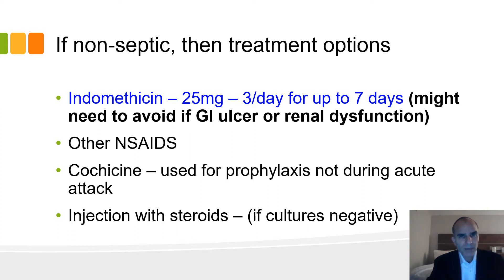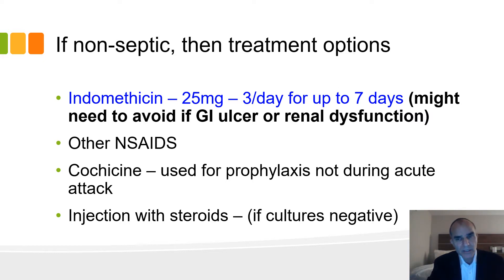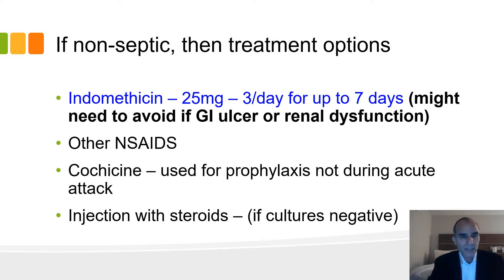In general, if it's not septic, your treatment options are: indomethacin, which I have found over the years is specifically effective for gout or pseudogout — 25 milligrams three times a day for up to seven days. In younger patients, I'll give double that dose for the first two days. Be careful if there's any history of GI bleeding or renal dysfunction. You can try other NSAIDs, but they're not as effective as indomethacin for whatever reason. Colchicine is used for prophylaxis but not during an acute attack. If they can't take anti-inflammatory medication — due to allergy or renal dysfunction — one option is steroids, but you must be sure they don't have an infection.